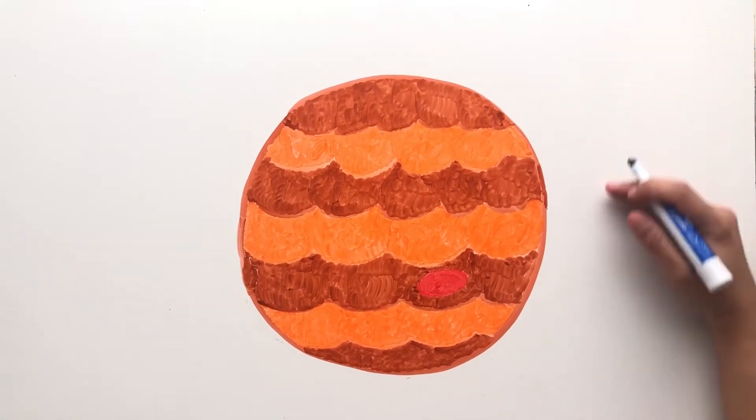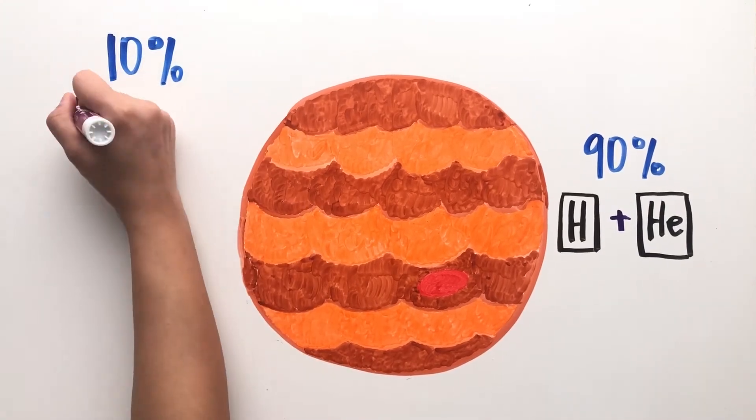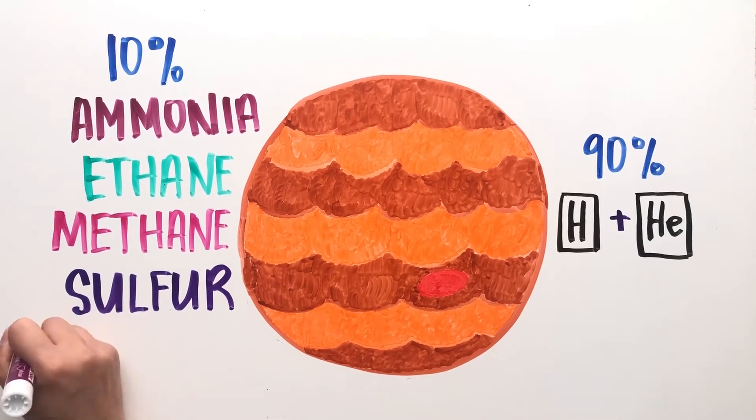The planet is mainly made up of hydrogen and helium and small traces of other gases like ammonia, ethane, methane, sulfur, and phosphorus.